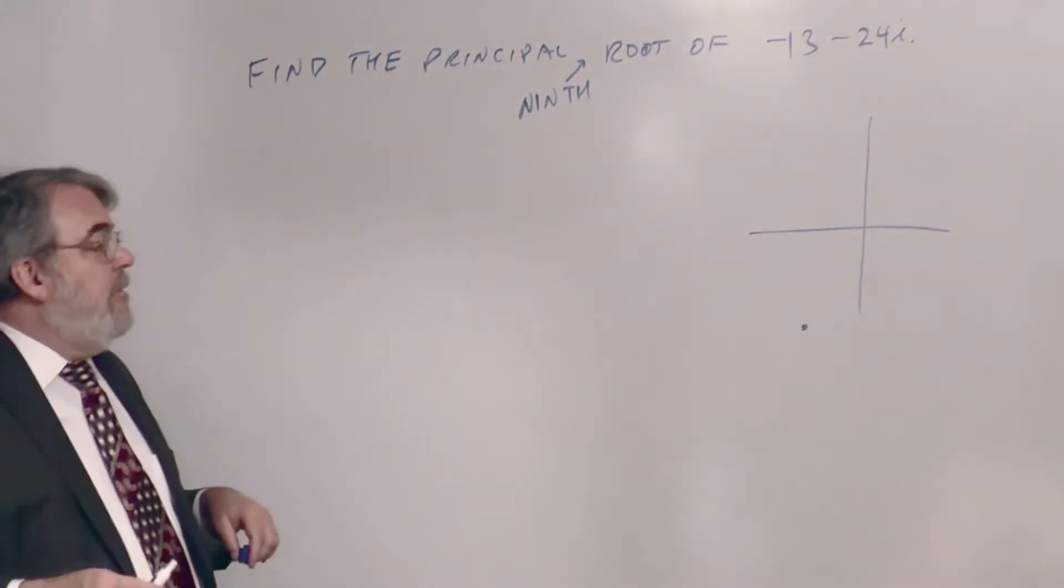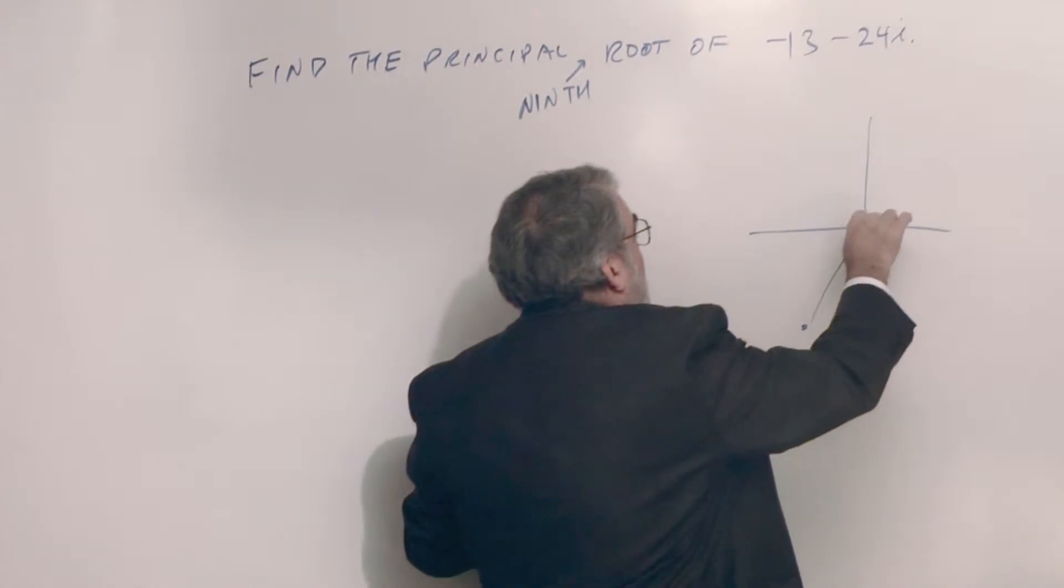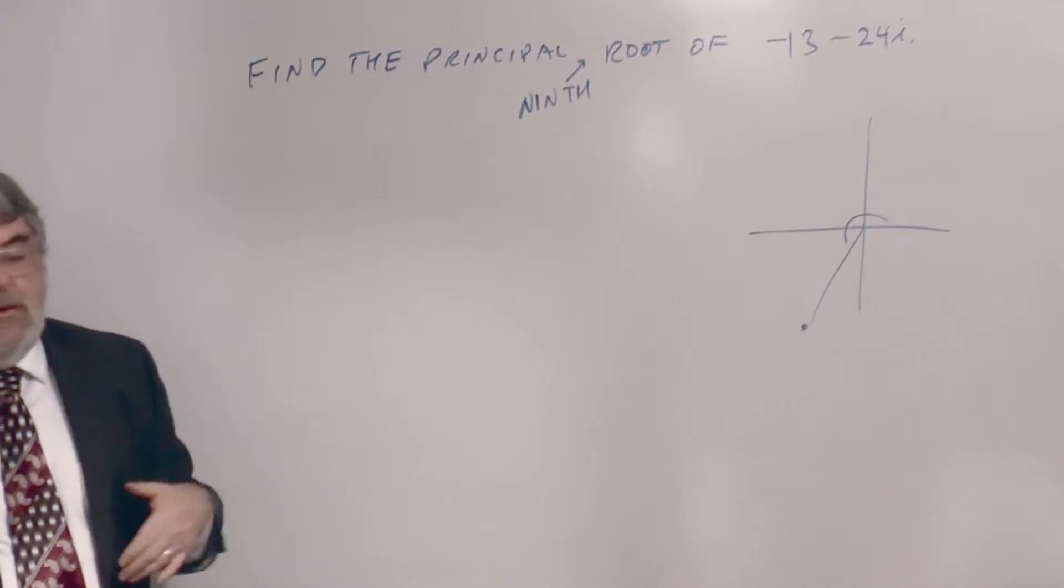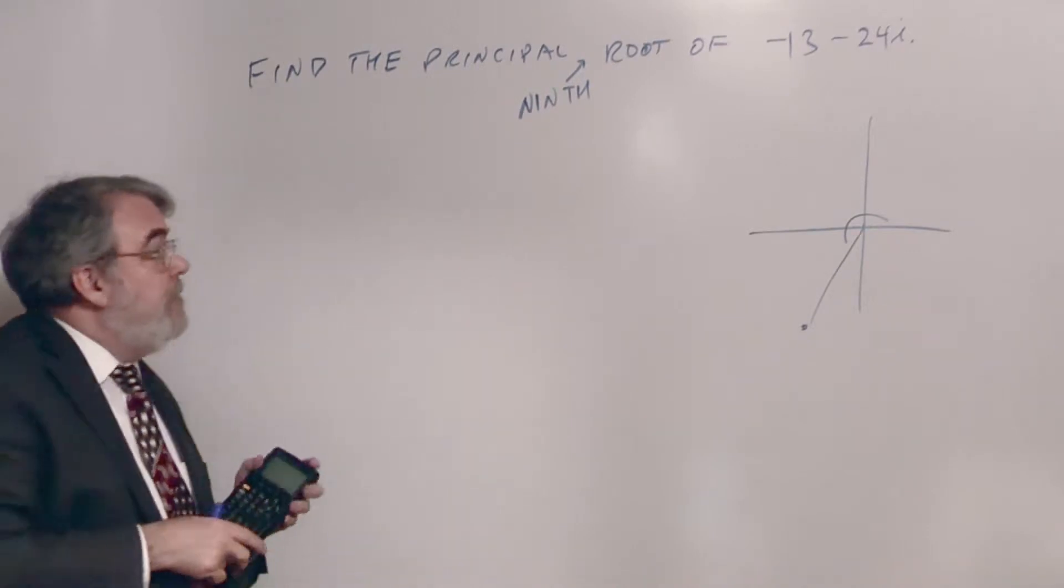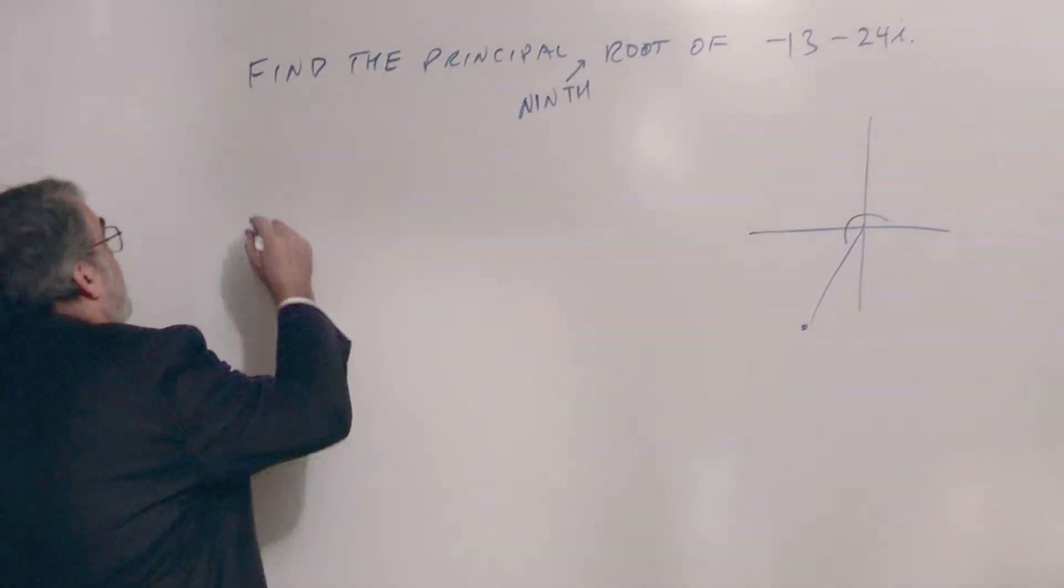And I want to take the 9th root, which means the angle will be 1/9th of that big angle and then the 9th root of the length. It's complicated, isn't it? Alright, so let's first of all convert this to polar form.